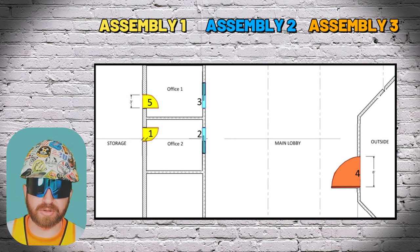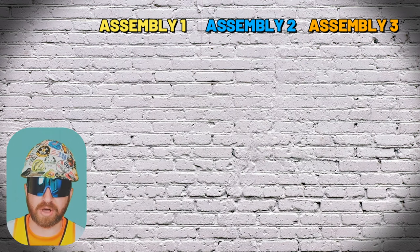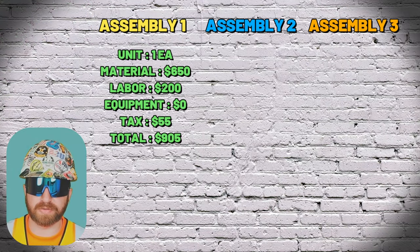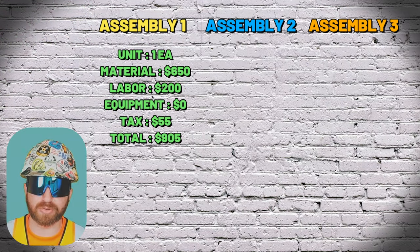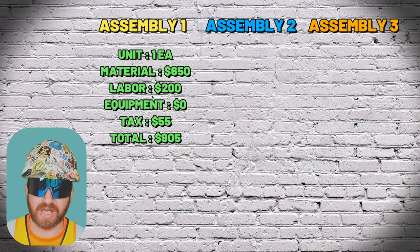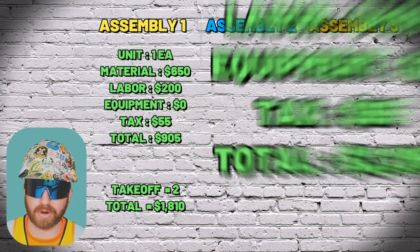An assembly includes all costs associated with a specific takeoff item. Looking closer, the first assembly would look something like this — a typical door assembly. It uses a combination of historical or verified costs and multiplies it by the quantity gathered from your takeoff software.